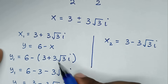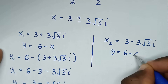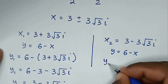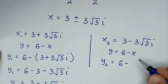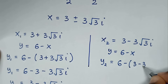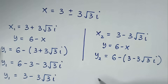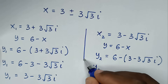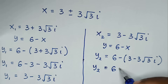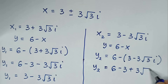Then from equation 3, y is equal to 6 minus x. For x₂, y₂ is equal to 6 minus bracket 3 minus 3 square root of 3i bracket. Opening the bracket gives y₂ equals 6 minus 3 plus 3 square root of 3i.